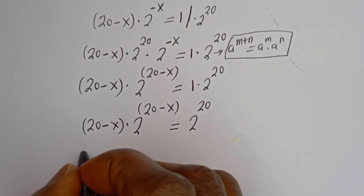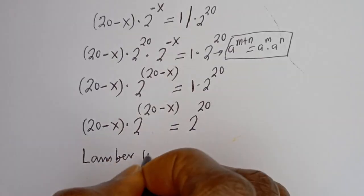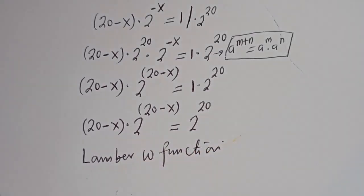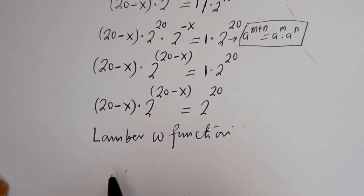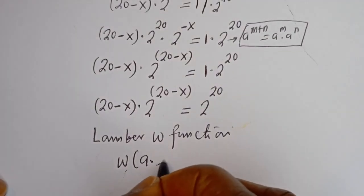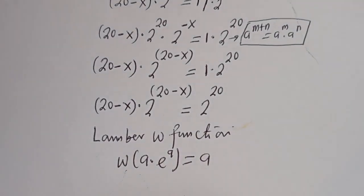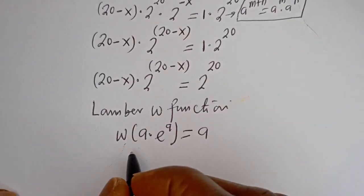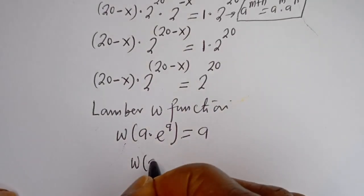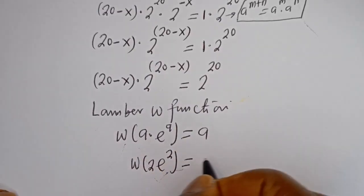From the Lambert W function, we have: W of a multiplied by e to the power of a is equal to a. At this point we need to introduce the W function to solve our equation.